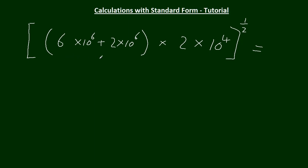Finally, we'll finish it off with this addition problem there. We've got a multiplication bit there, and then we're going to square root it. 6 add 2, 8 times 10 to the 6. That stays the same because we're just adding these numbers. And then we multiply that by 2 times 10 to the 4. And then we're going to square root it. So let's do this bit next. We do the powers first, 6 add 4, 10 to the 10. And this is 8 times 2, 16.